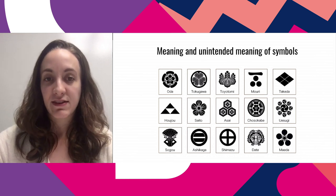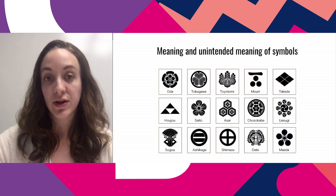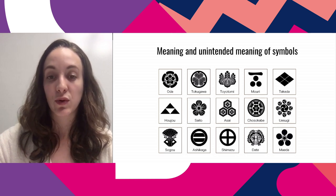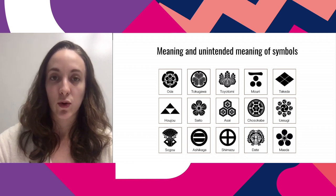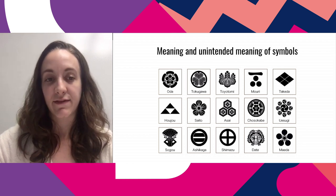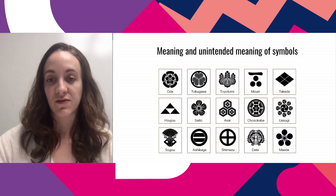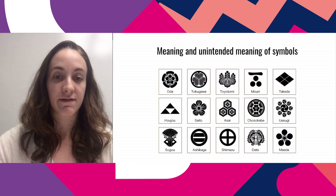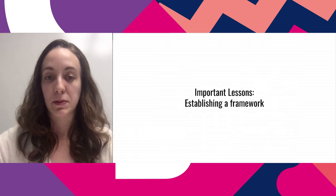Another interesting case study on symbol meaning is the Japanese Kamon. The blossom symbol of the renewal of life is fairly interpretable if you know plant life is correlated with renewal. But others can be harder to understand without the right background — for example, one Kamon in the top right is four diamonds, which might be unclear at first glance. Some of these symbols are quite specific to a particular region.